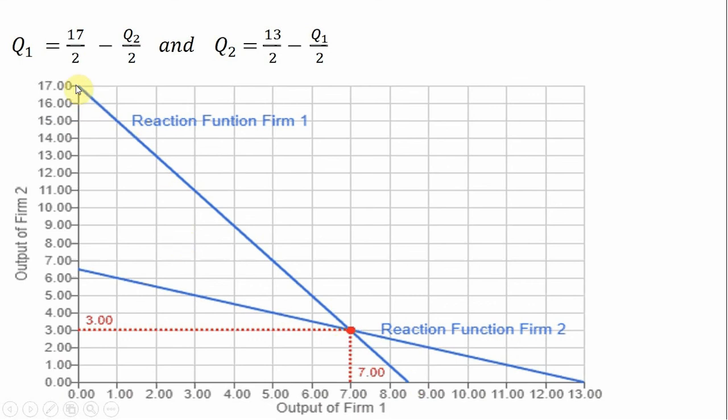To get this vertical intercept, what we'll do is set Q₁ equal to 0 and then solve for Q₂. So setting the left-hand side equal to 0 and solving for Q₂, we get a value of 17. And that's where this vertical intercept is coming from.